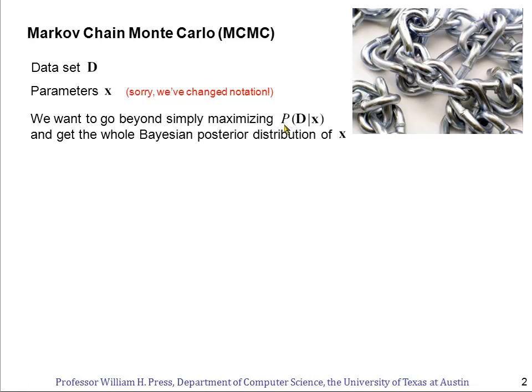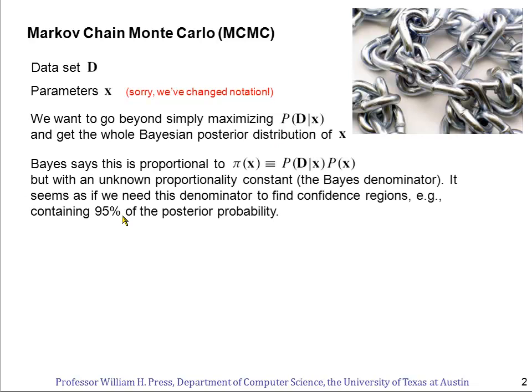We're going to get the whole Bayesian posterior distribution of the parameters X. Now Bayes tells us that this is proportional to the probability of the data given the parameters times some prior on the parameters that we think we know. But it's only proportional.